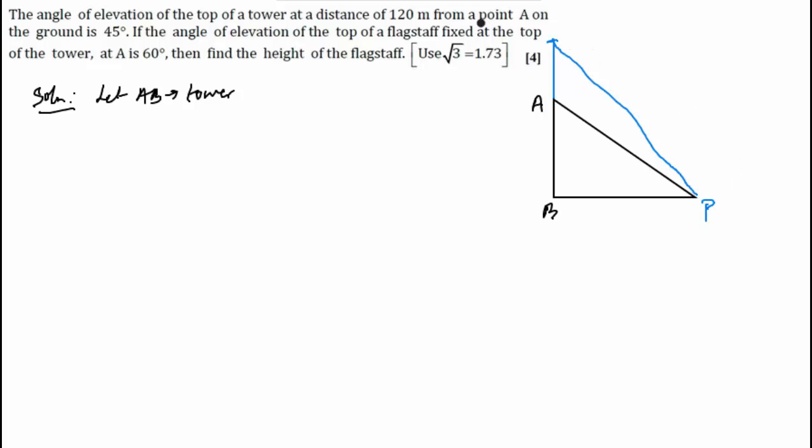So this point P, this angle is 45 degrees and this angle is 60 degrees. And we are given the tower is at a distance of 120 meters from a point A on the ground. So this is AB, we can mark it as C, and this point BD. Angles are given, we need to find the height of the flagstaff. So we'll first write whatever is given to us.